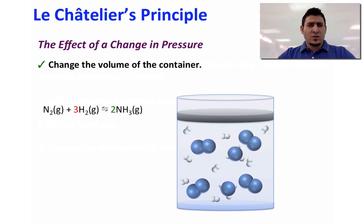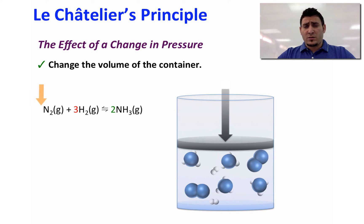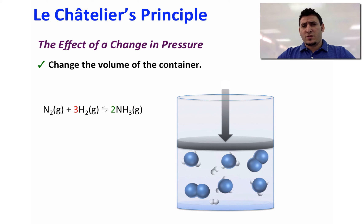Consider a container with four particles of N2, eight particles of H2, and two particles of NH3. If we decrease the volume of the container, the pressure will increase, so the system will readjust itself by decreasing the pressure. Looking at the reactant side, we have four particles total: one particle of N2 and three particles of H2, taken from the coefficients of the balanced equation. The product side has only two particles of NH3. For the system to reduce the pressure, it will shift to the side that produces fewer particles — the right side. So the equilibrium will shift to the right.